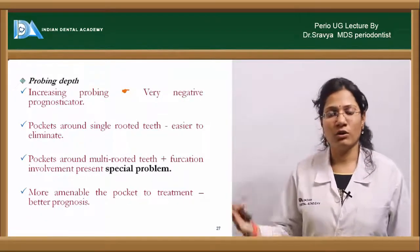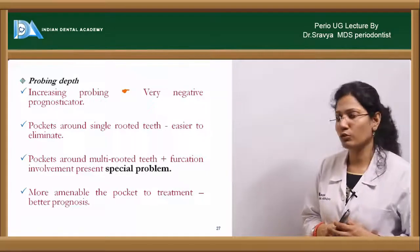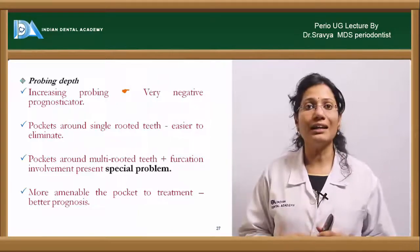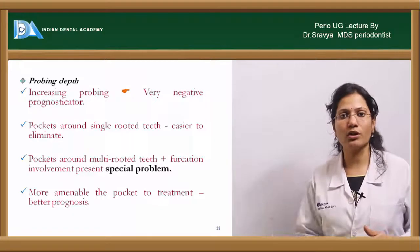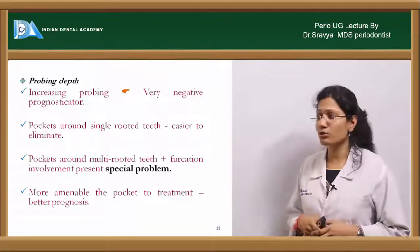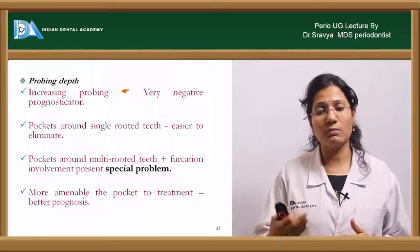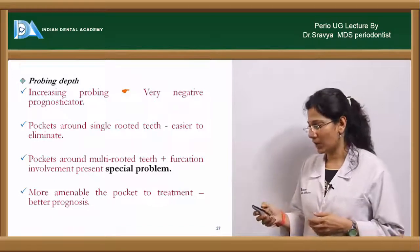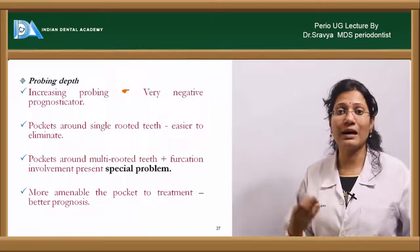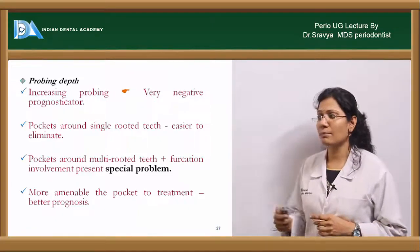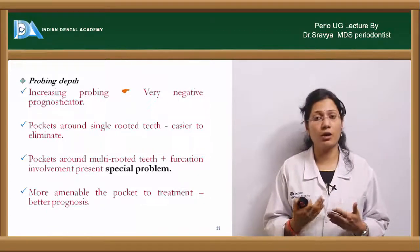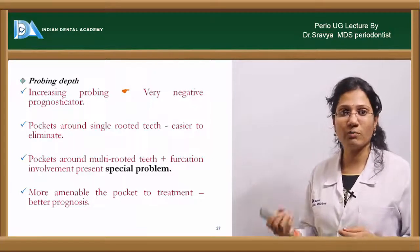What are the effects of probing depth on your overall prognosis? Increased probing depth is a very negative indicator — if the probing depth is constantly increasing, the disease is also progressing. Pockets around single-rooted teeth are easier to eliminate, whereas pockets around multi-rooted teeth are difficult to eliminate and they pose a special problem, especially if the multi-rooted tooth is involved with a pocket and furcation involvement. The pocket most amenable to periodontal treatment would have the best or most favorable prognosis.